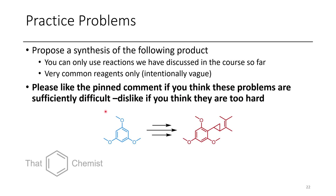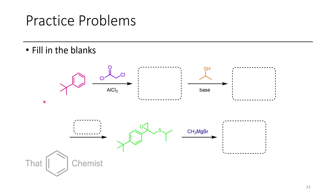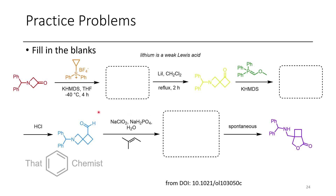If you really like the style of these problems and think there is sufficient difficulty, like the pinned comment where I will ask whether it's too easy or too hard. In the next problem, take tert-butylbenzene, treat it with a series of different reagents, and show the product at each step. In the final problem, we have the use of a Trost ylid with a ketone in a multi-step synthesis reported in Org. Lett. by Eric Carreira's group — this really highlights the utility of the reactions we've talked about.